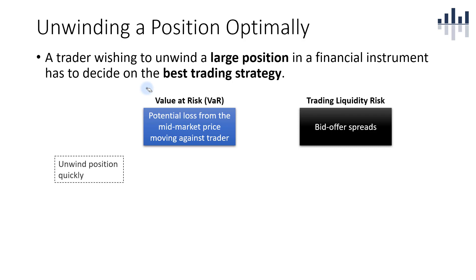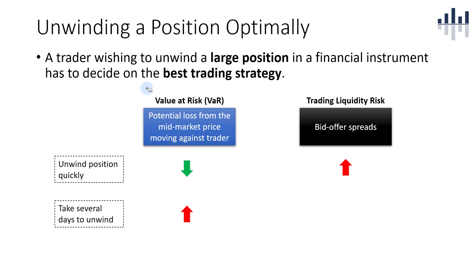The trader can choose to unwind the position quickly, and in this case the trader will be able to minimize the potential loss from the mid-market price movement, but the trader will face very large bid-offer spreads because the larger the position, the more illiquid it is, then the wider the bid-offer spreads. If the trader chooses to take several days to unwind the position, the potential loss from the mid-market price moving against the trader will be larger, but the bid-offer spreads will be lower or tighter.